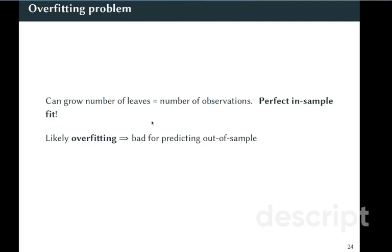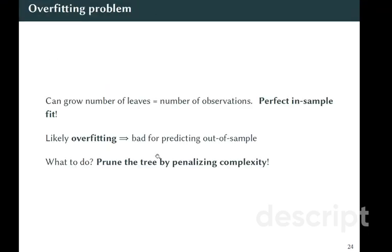Even if we put some kind of stopping criteria, how do we know that we are not overfitting? In this case, what we want to do is to prune the tree by penalizing complexity.